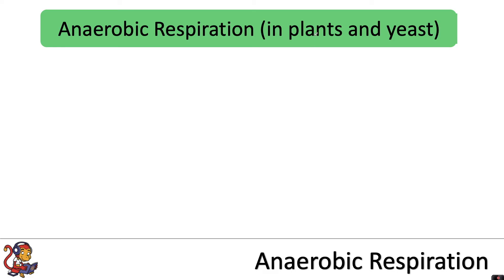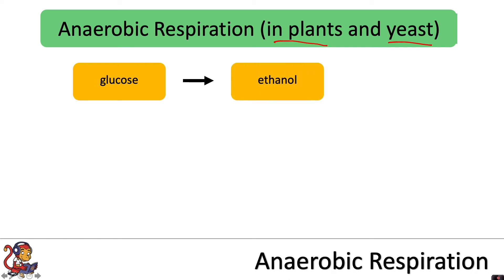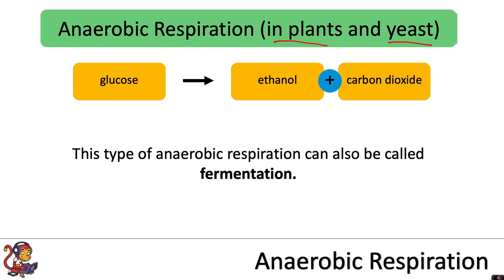Anaerobic respiration also occurs in plants and yeast — and yeast is a type of fungus. The equation for anaerobic respiration in plants and yeast is different to that of animals. We still start off with glucose, but this time the glucose breaks down into ethanol and carbon dioxide. This type of anaerobic respiration can also be called fermentation.